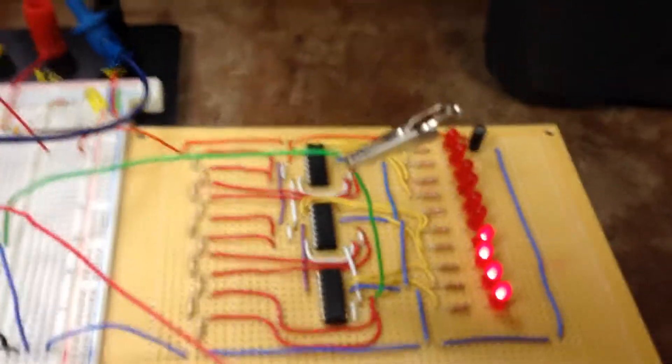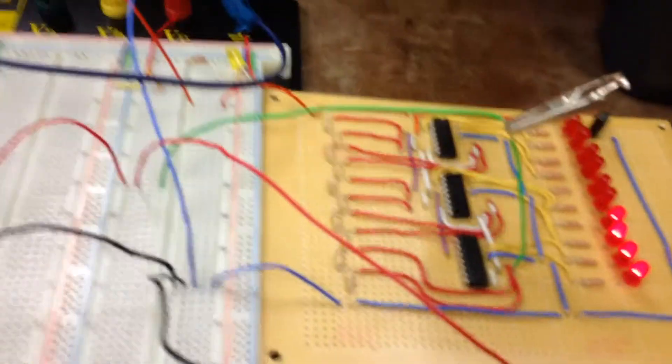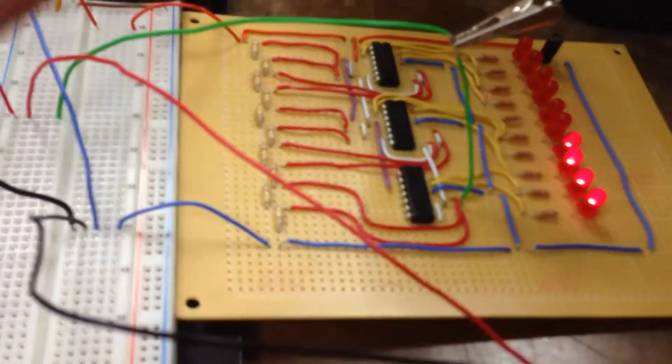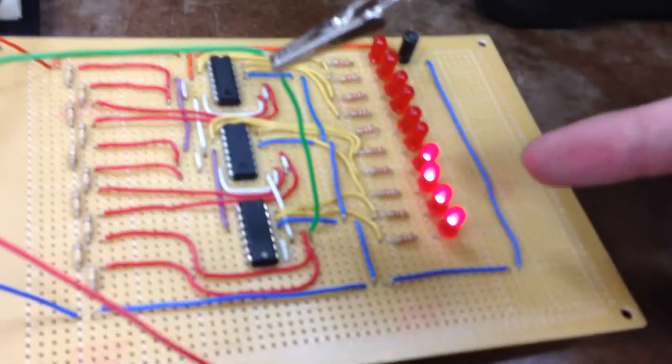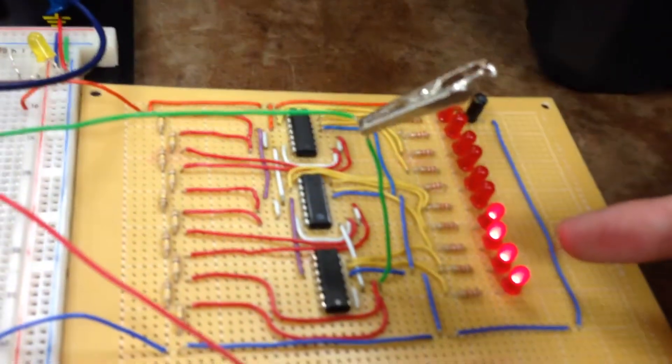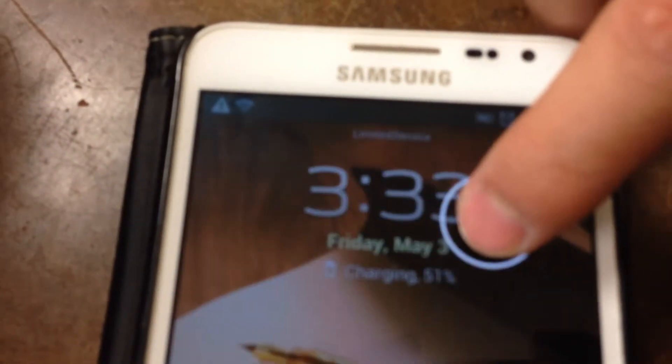And here we have the voltage detector circuit which tells the viewer the voltage that we are reading from the receiver. Right now we are reading about 1 LED equals 1.2 volts, so 4 LEDs is about 4.8 volts. And this is the phone we are charging right now from the circuit. It shows that it is charging and it is 51% charging.